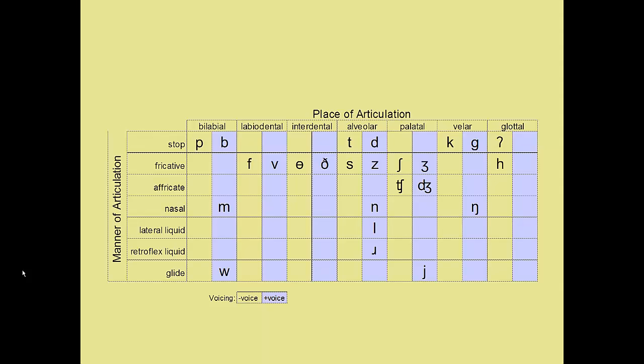Students sometimes look at this chart and are overwhelmed — don't be. It's really pretty straightforward. To review, there are three features of consonants indicated on the chart: place of articulation across the top, manner of articulation along the side, and voicing indicated by the color of the box. The symbols themselves are mostly from the English alphabet. There are a few new ones you will have to remember, but only a few.